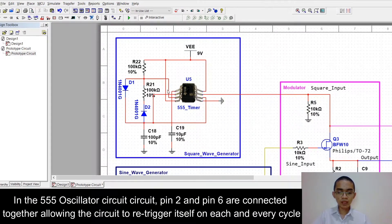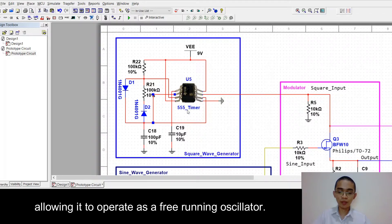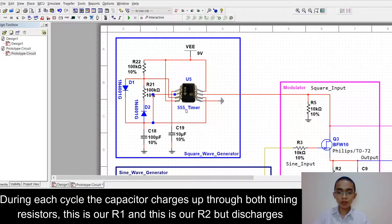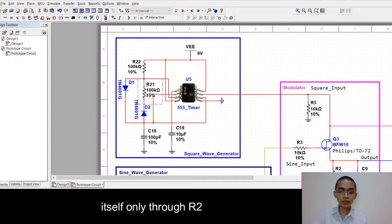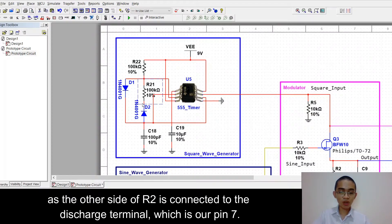In the 555 oscillator circuit, pin 2 and pin 6 are connected together allowing the circuit to re-trigger itself on each and every cycle, allowing it to operate as a free running oscillator. During each cycle, the capacitor charges up both timing resistors. This is our R1, this is our R2. But this charges itself only through resistor 2, as the other side of resistor 2 is connected to the discharge terminal, which is our pin 7.